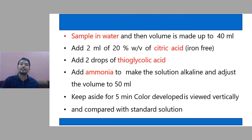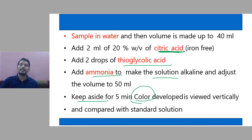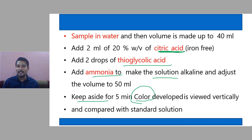The common procedure: first, the sample is dissolved in water and volume is made up. Then citric acid is added, followed by thioglycolic acid, then ammonia is added to make it alkaline. It is then kept aside for color to develop. That color is compared with a standard solution of iron prepared in a prescribed manner. The reagents are: sample, citric acid, thioglycolic acid, and ammonia.